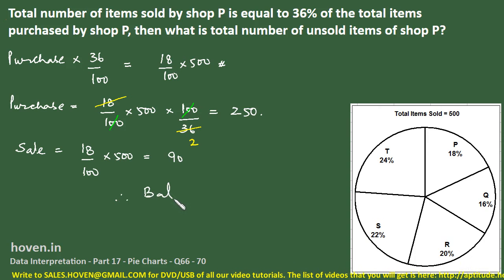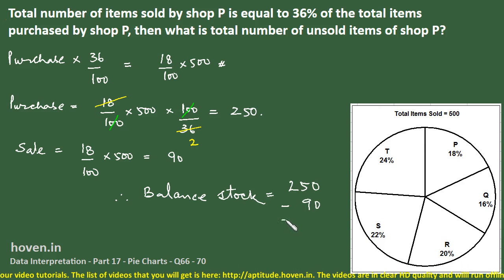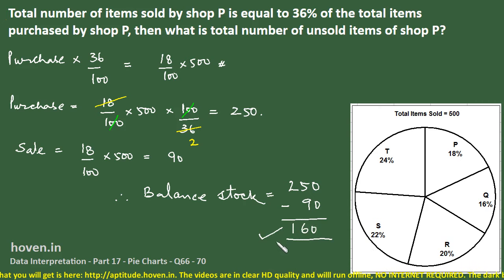And therefore the balance stock or the unsold items would be equal to 250 minus 90, which is equal to 160, which is the required answer. A bit of cool mind is required. Otherwise the questions are not difficult. They are in fact a bit interesting only.